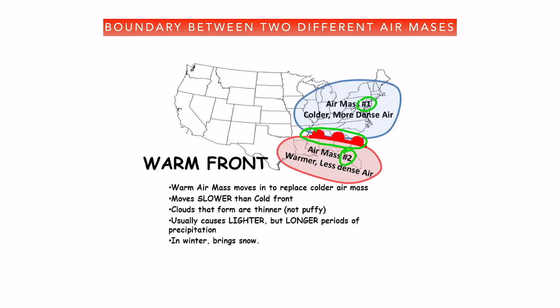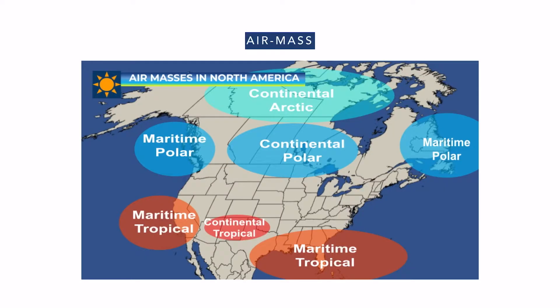Both air masses have different densities, and this difference is due to different temperatures and humidity. Now, an air mass is a very large body of air in which the horizontal and vertical distribution is almost uniform. An air mass can cover an area of thousands of square kilometers — so you can imagine how massive it is.